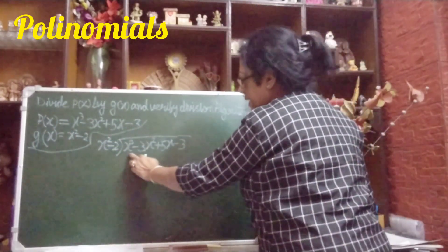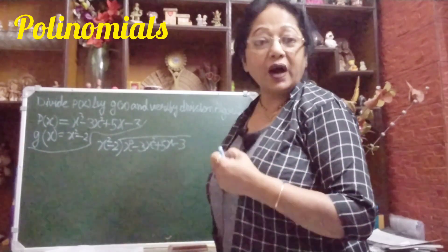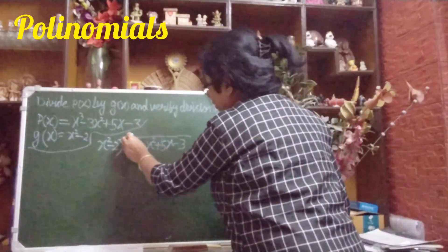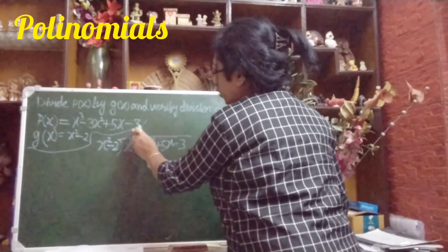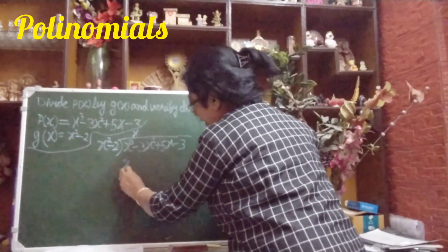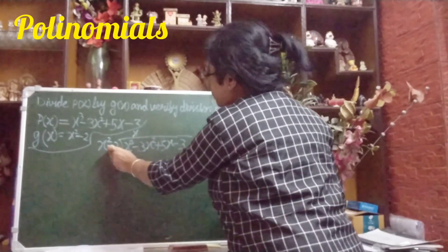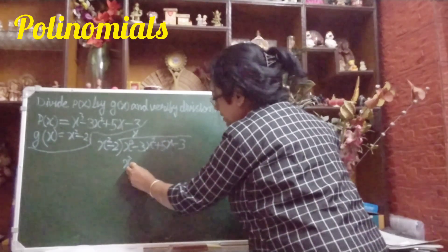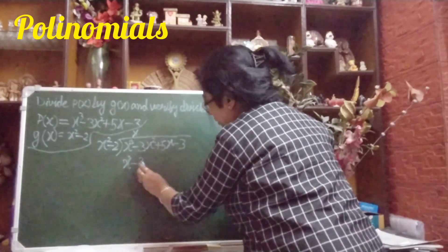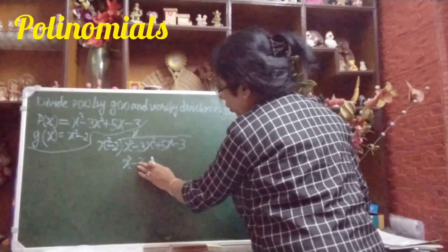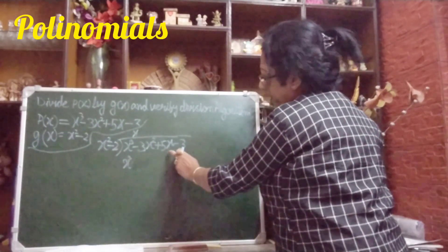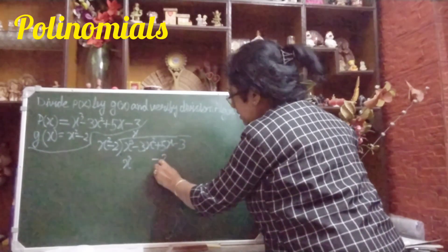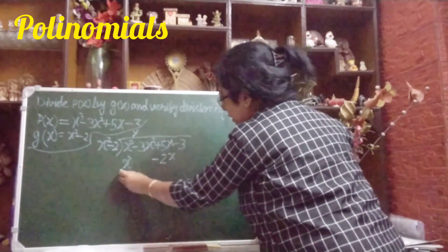The divisor starts with x² and the dividend starts with x³. So we multiply x² by x, giving x³. Write x³ and then −2 × x = −2x. So the first row is x³ − 2x.